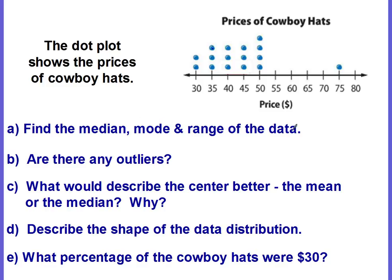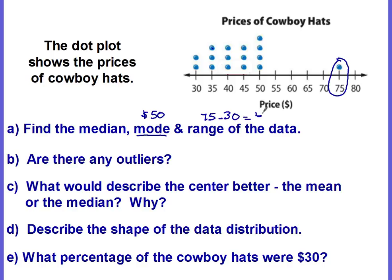Find the median, mode, and range of the data. The mode is the easiest — which one has the most dots above it? The $50. So the mode would be $50. The range is how spread out your data is — the high minus the low. The high is not the largest number on the number line; the high is the largest dot, which is $75. And the lowest would be $30. So 75 minus 30 equals $45.